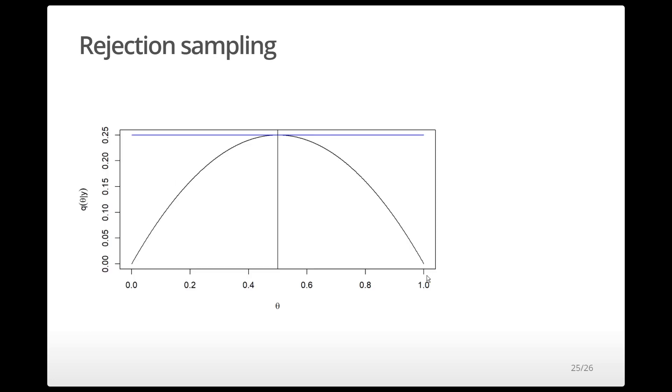The following graphic displays the target density q in black and the bounding function m times g in blue. The location of the mode is shown by the vertical line.